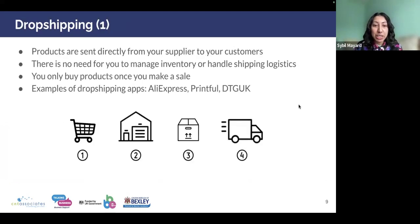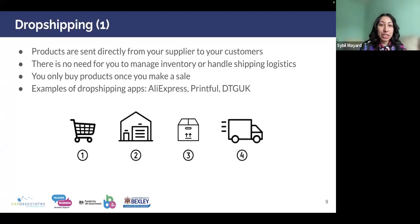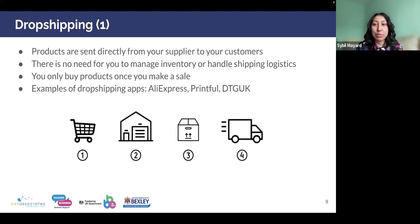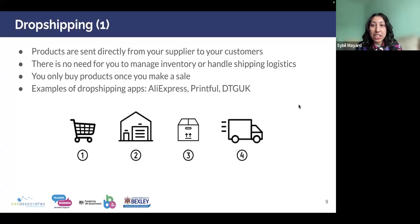If you don't have products yet to sell, there is drop shipping, which is a business model that has become very popular recently. How it works: the products are sent directly from your supplier to your customers, so you never need to manage any inventory or handle shipping logistics. You only buy the products once you make the sale. A few examples of drop shipping apps that work with Shopify are AliExpress, Printful, and DTG UK.